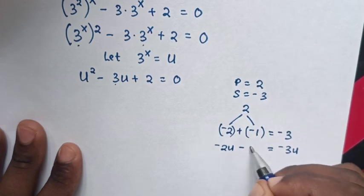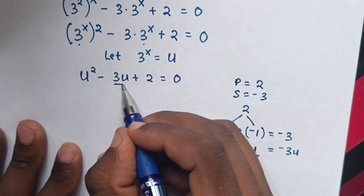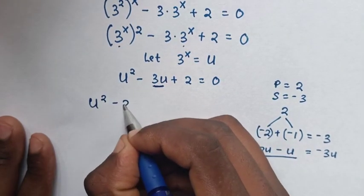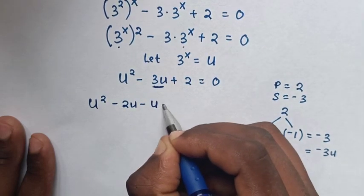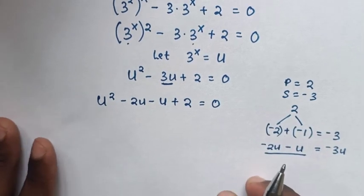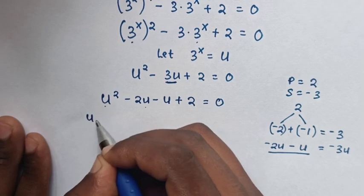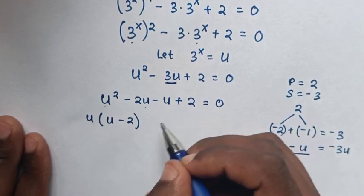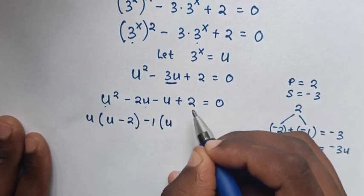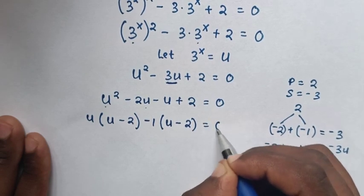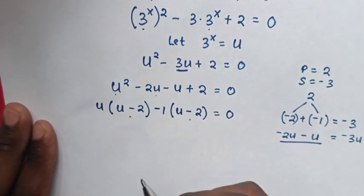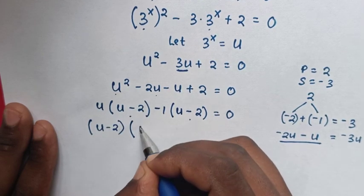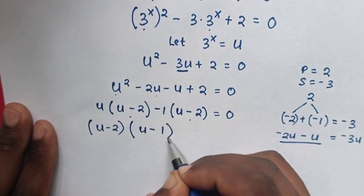So we split the middle term: negative 3u becomes negative 2u minus u. We substitute into the equation: u squared minus 2u minus u plus 2 equals 0. Then u is common in the first two terms, giving u(u minus 2), and then u minus 2 is common overall, giving (u minus 2)(u minus 1) equals 0.